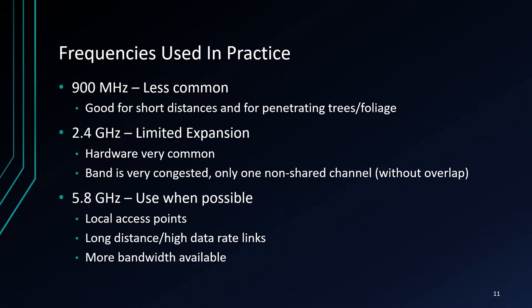The 2.4 GHz band is commonly used for mesh networking devices, but it is also very crowded — many consumer devices use it for Wi-Fi and other connections, making it very noisy. Noise is also less prevalent in the 5.8 GHz band. The 900 MHz band is less commonly used for mesh; however, it is great for short-distance links where trees and other foliage may be difficult to avoid, because lower frequencies more easily penetrate obstacles such as trees and foliage.